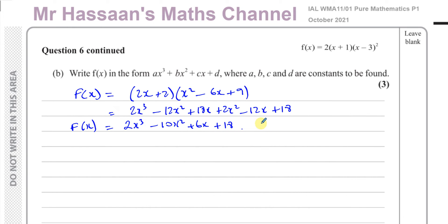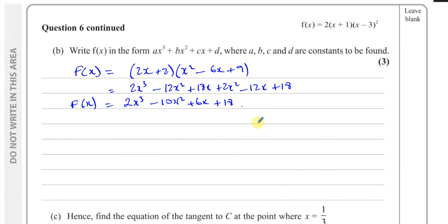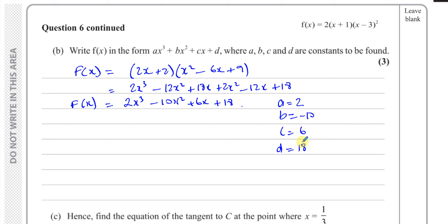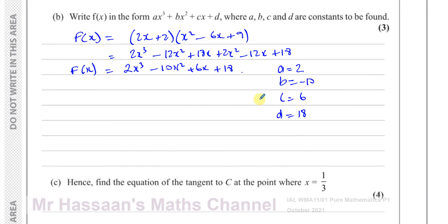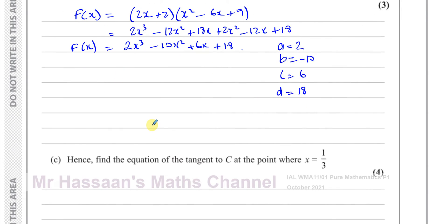So that is f of x in the required form. The constants are: a equals 2, b equals minus 10, c equals 6, and d equals 18. That's part B complete.